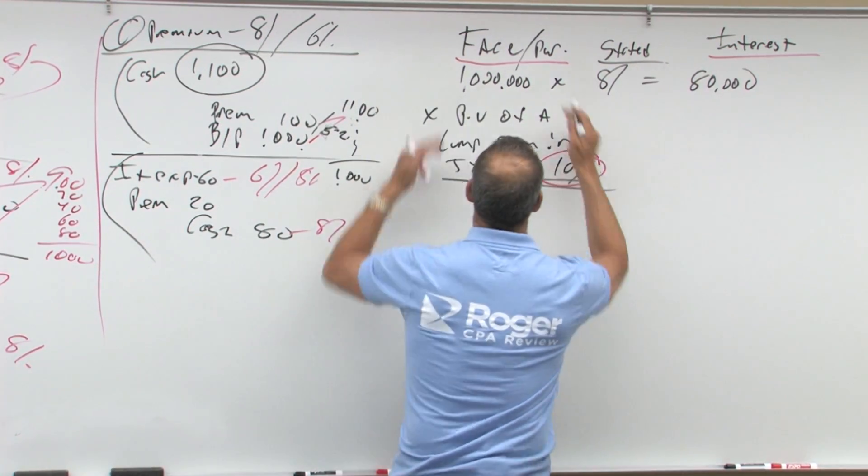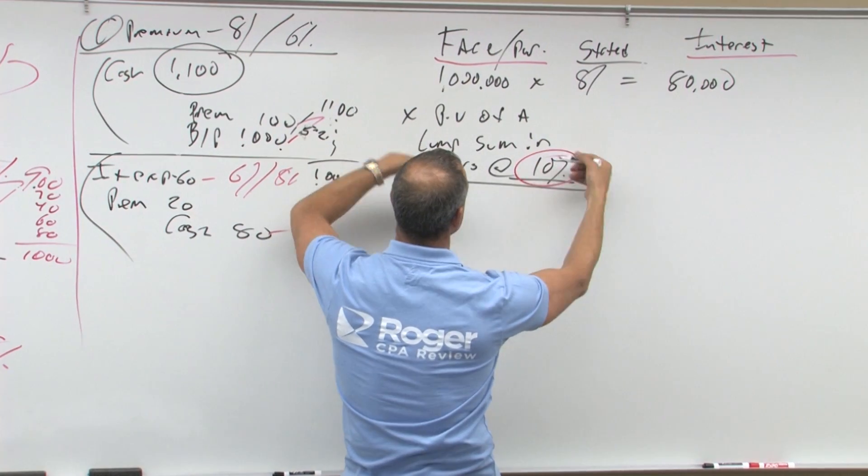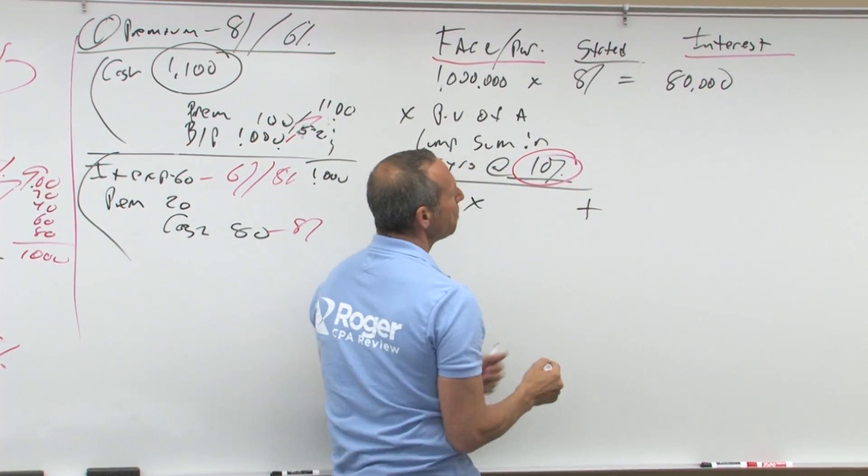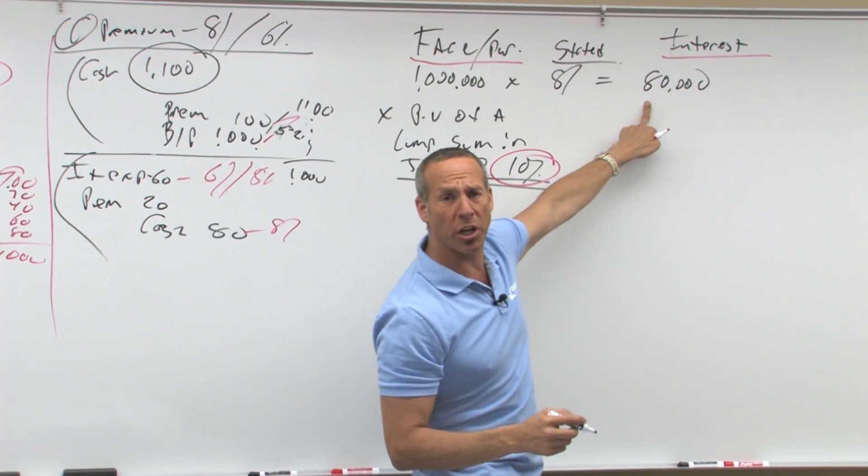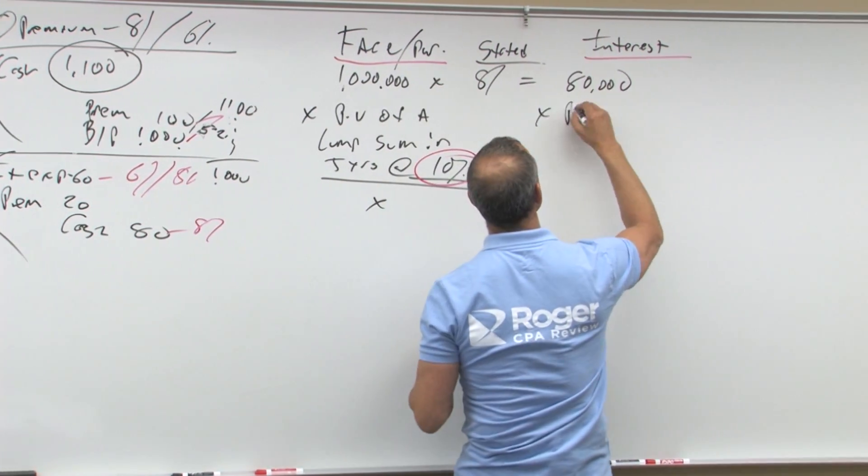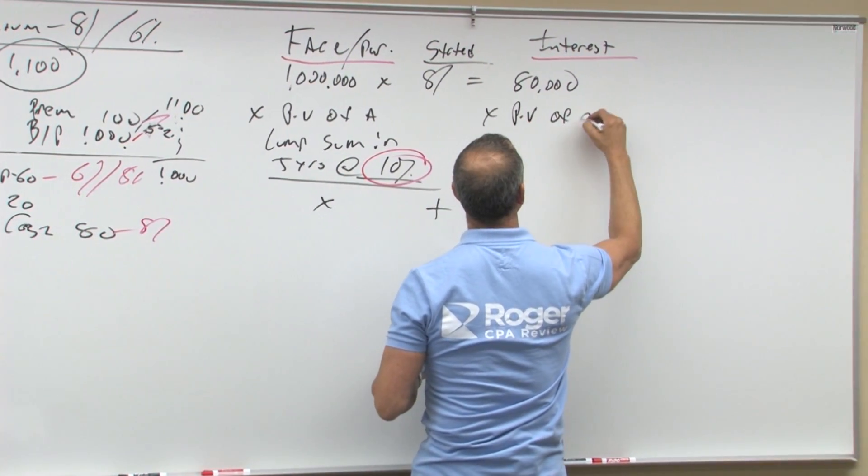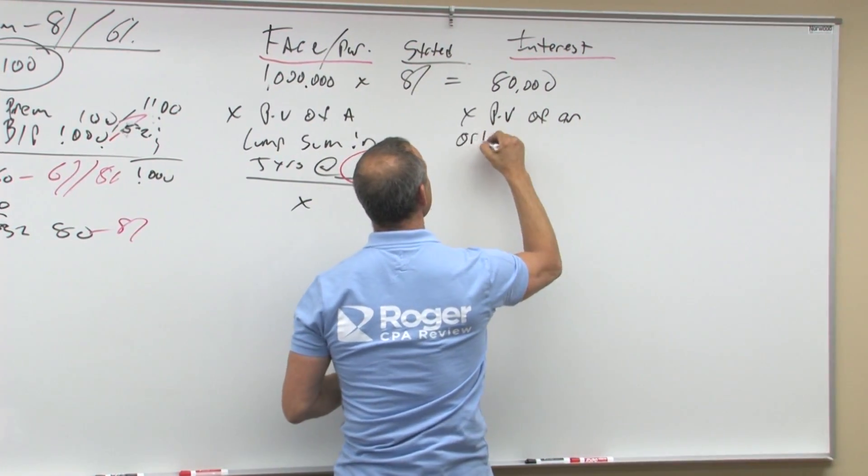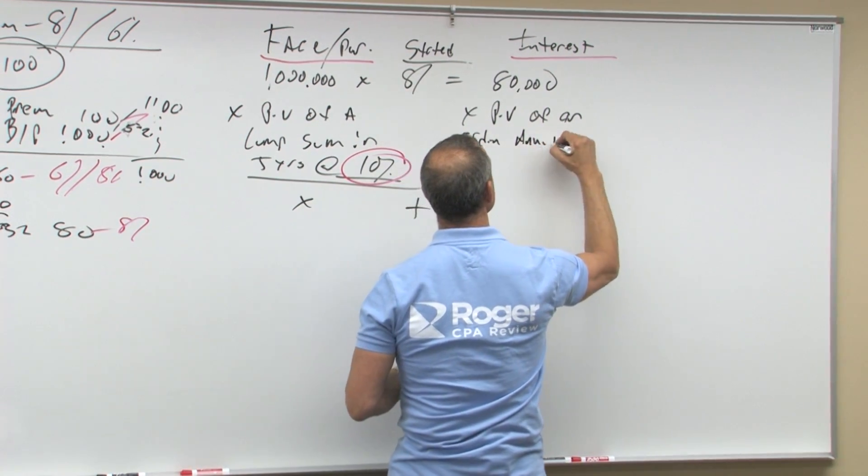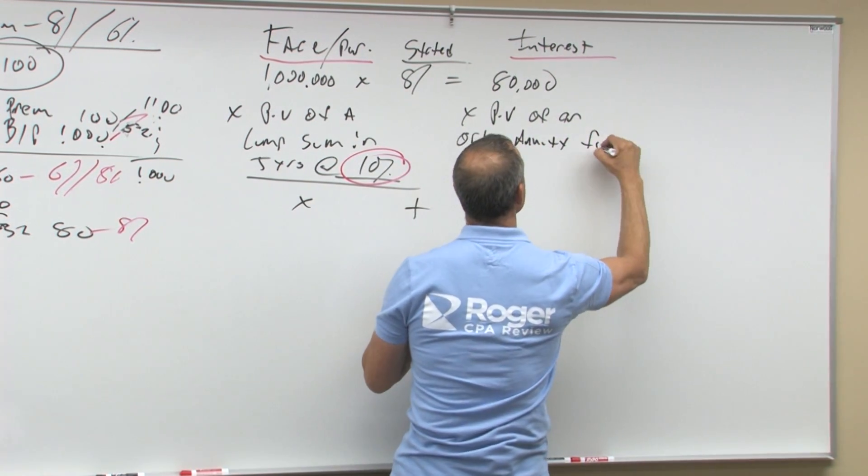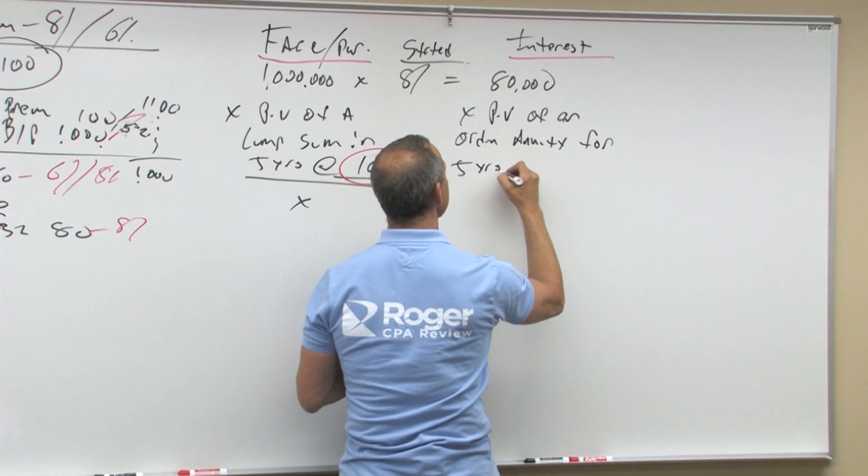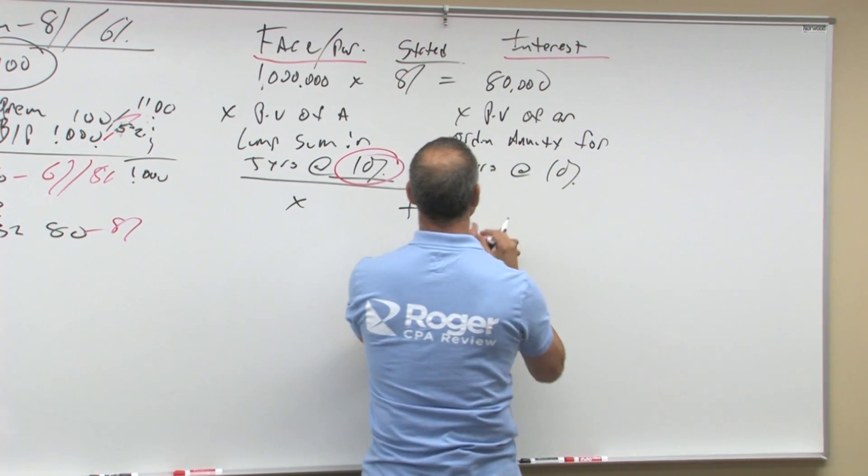So in this case, let's say a million, present value, five years, 10 percent is this, plus what? $80,000 annuity times the present value of an ordinary annuity for five years at whatever rate you want to earn, 10 percent. Now notice the difference. It says present value of an ordinary annuity.